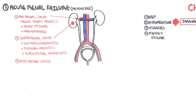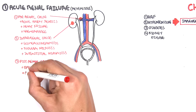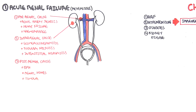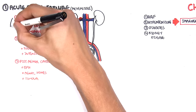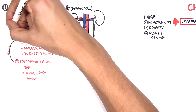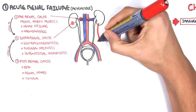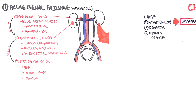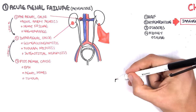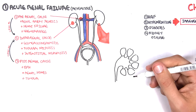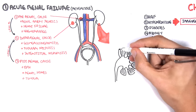Post-renal causes include benign prostatic hyperplasia, renal stones, and tumours. It is important to note that pre-renal and post-renal causes often lead to intra-renal causes, and all of this leads to acute kidney failure. Acute renal failure can in turn lead to chronic kidney failure.